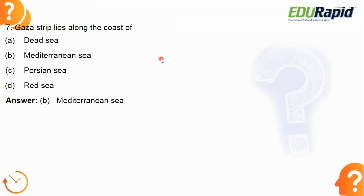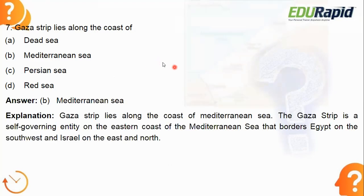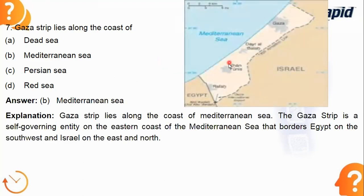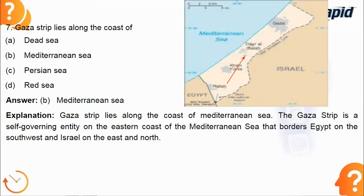The answer is the Mediterranean Sea. You can see in the picture — this whole area is the Gaza Strip. It is a very important disputed area between Israel and Palestine. The Gaza Strip lies along the coast of the Mediterranean Sea, with Israel bordering it.